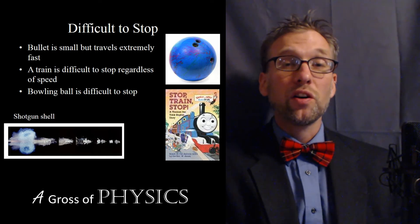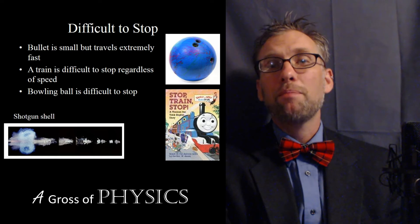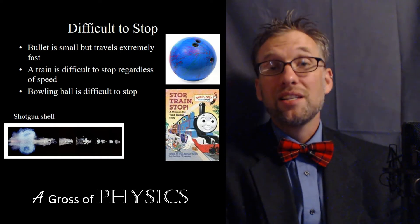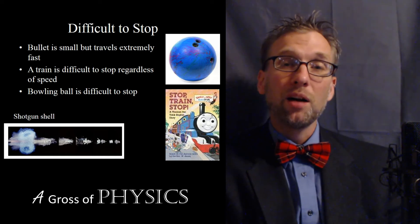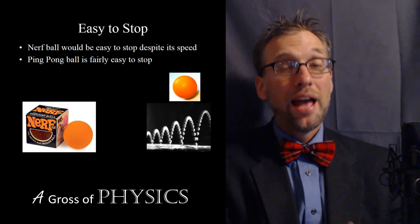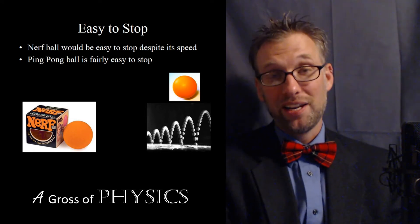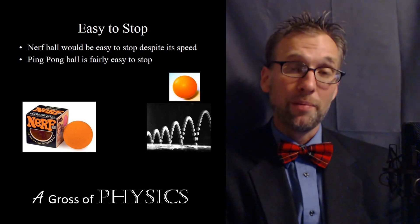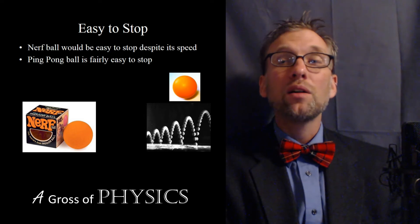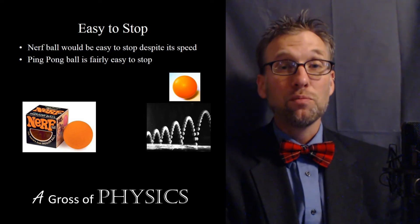Now on the other hand, we can have objects that are easier to stop, and typically we could have objects that might be made of foam. A nerf ball might be easy to stop. A ping pong ball would be easier to stop. Now if I strike a ping pong ball at a high rate of speed and it hits my arm, I may say that that's not very easy to stop. In fact, I'm going to have a bruise on my arm. So like I said, the factors that involve momentum are not only the mass but how fast it's moving.